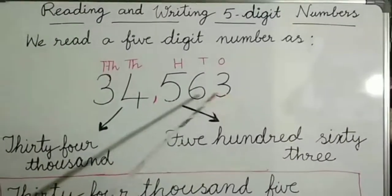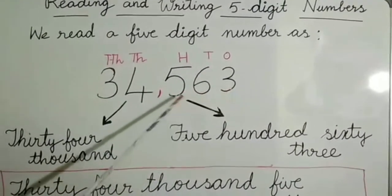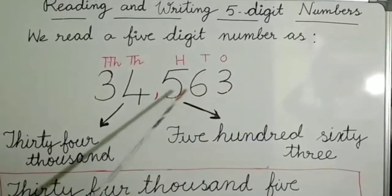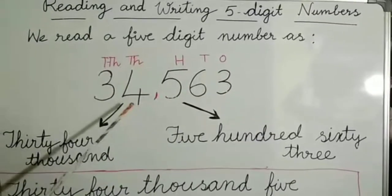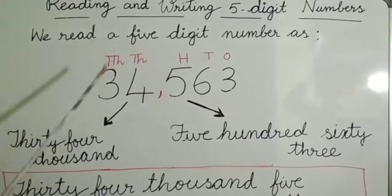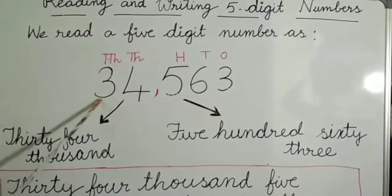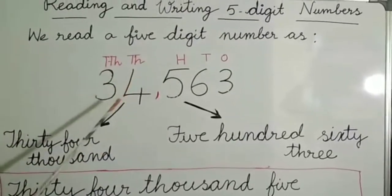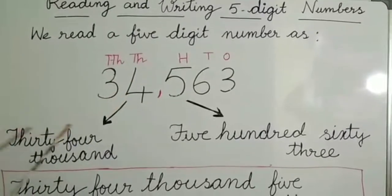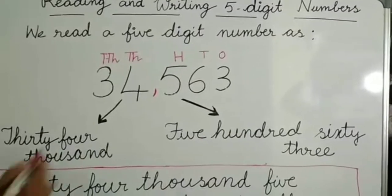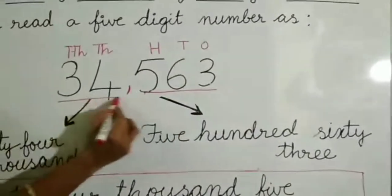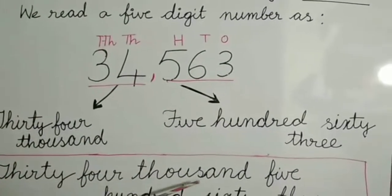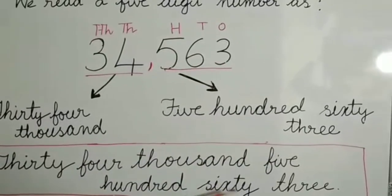Now, after placing the comma, the ones period looks like a three-digit number. We read it as five hundred sixty-three. Then 4 is in thousands and 3 is in ten thousands, giving us three ten thousands plus four thousands — that is thirty-four thousands. So we read the full number as thirty-four thousand five hundred sixty-three.